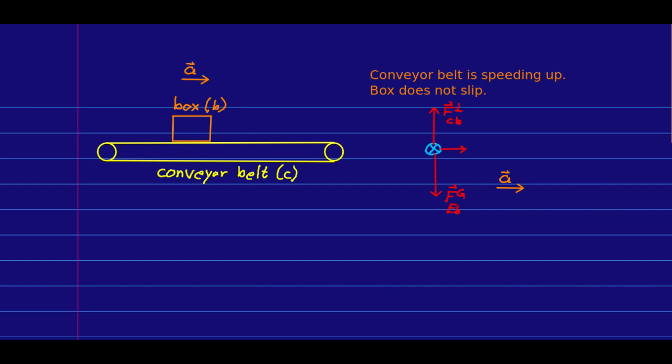And there's only one force that can possibly be, because the only thing it's in contact with is the conveyor belt. So this must be the frictional force by the conveyor belt, and because it's not slipping, this is a static friction. So static friction is causing the box to speed up.